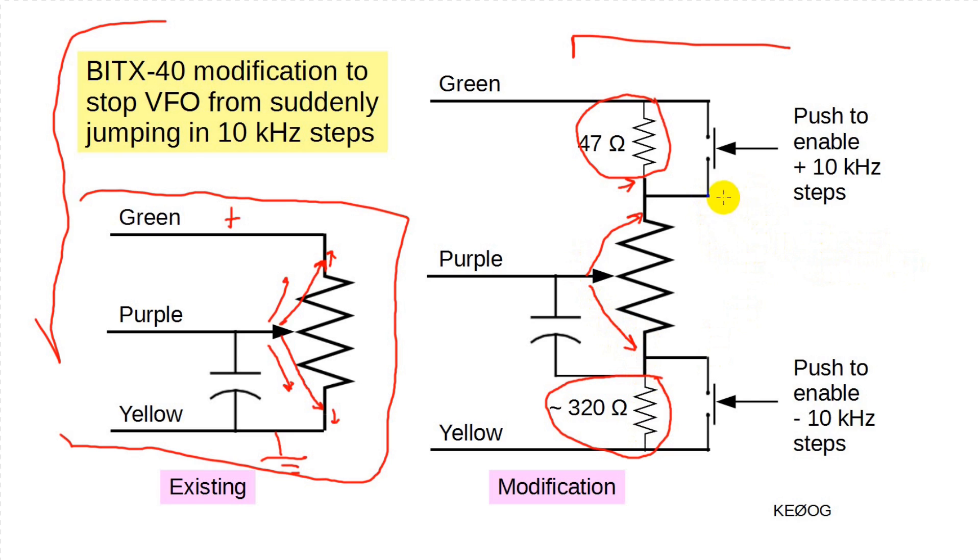But the VFO can only cover a 50 kilohertz wide band segment. There are times when you do want it to go up or down in 10 kilohertz increments so as to cover the entire 40 meter voice band segment. So I attached a push button that will short out the added resistance. For example, if the potentiometer is turned all the way up, pressing the top galloping enable button allows it to go up in 10 kilohertz steps.